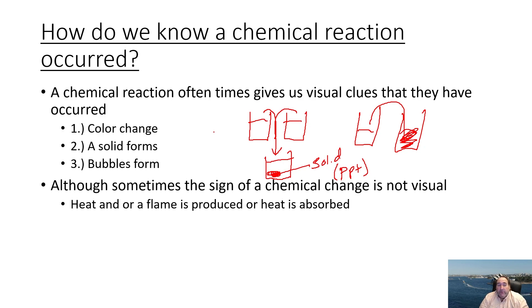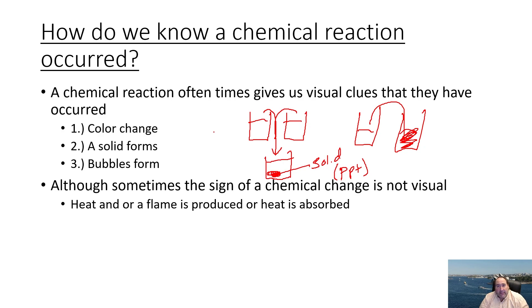A precipitate is basically a solid, but not all solids are a rock-hard solid that drops right to the bottom. Formation of a precipitate can be an observation like the solution getting cloudy, getting mushy, or seeing stuff floating around that wasn't there before. Sometimes people think a precipitate has to be a rock-hard solid, but it can just be something that gets really cloudy.